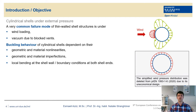It's widely known that failure under external pressure is one of the most common failure modes in thin-wall structures, and the external pressure can be produced by wind loading or by vacuum. It's also important to know that the buckling behavior of cylindrical shells under uniform external pressure can be significantly affected by the impact of geometric and material nonlinearities as well as geometric and material imperfections. It's also important to consider the local bending and the impact of boundary conditions on the buckling behavior of cylindrical shells.